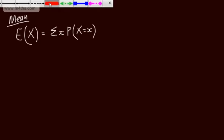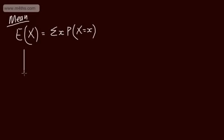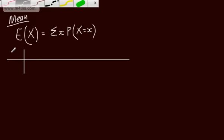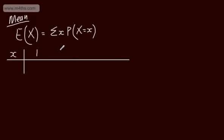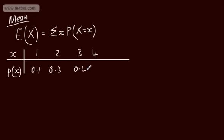Let's look at a basic example. We'll draw up a table and take some values of x: 1, 2, 3, and 4. Then we'll look at the associated probabilities, which we write as P(X=x). Let's put in 0.1, 0.3, 0.4, and 0.2. All of those sum to give 1.